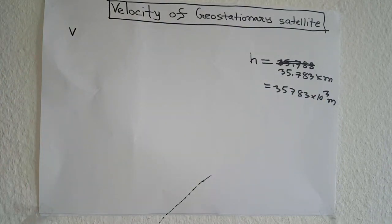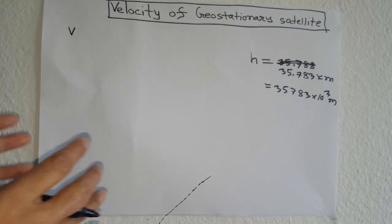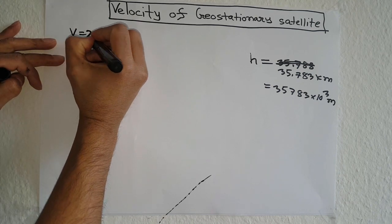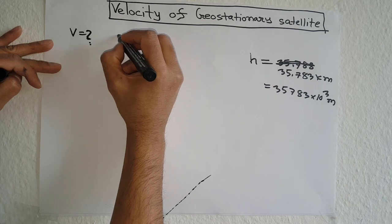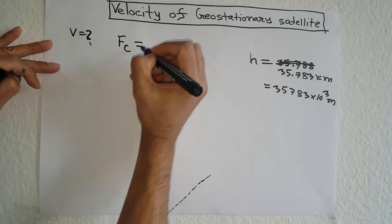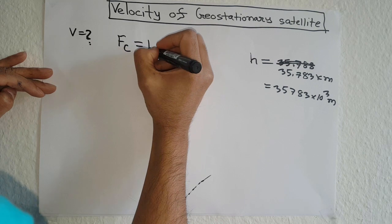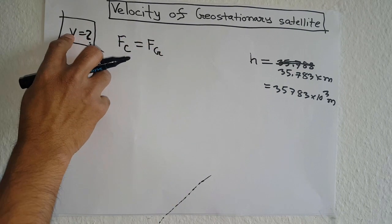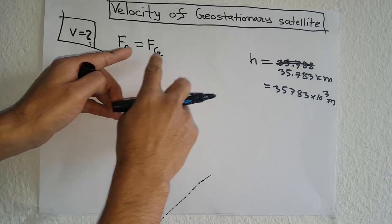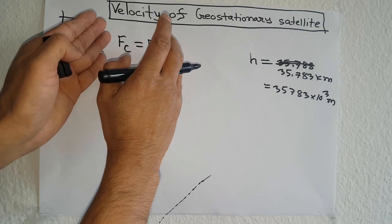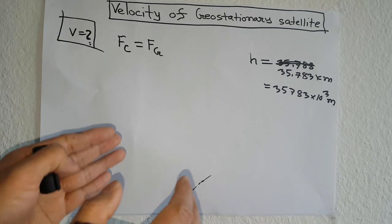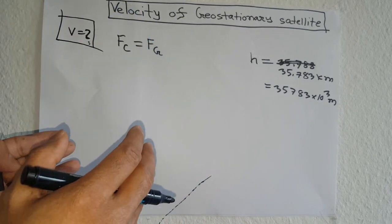Any kind of geostationary or geosynchronous satellite must fulfill the following condition: the centrifugal force, FC, must be equal to the gravitational force, FG. From this condition we derive the velocity. If this condition is fulfilled for any geostationary satellite, that satellite can maintain a constant height from the ground and a constant velocity.